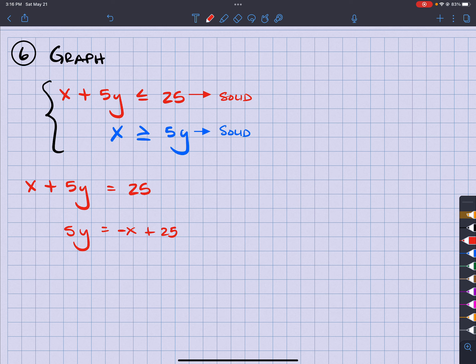So I have 5y is equal to negative x plus 25. And then I'm going to divide every single one by 5. So y is going to equal negative 1 fifth x plus 5.